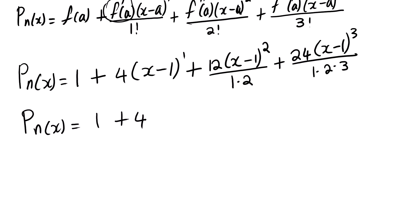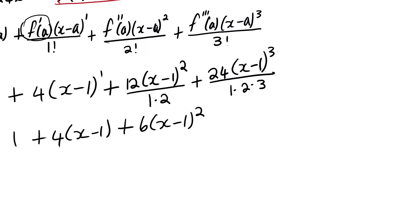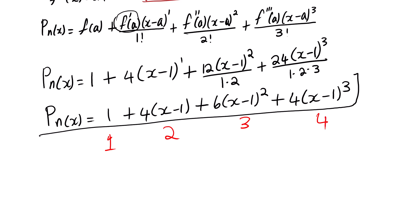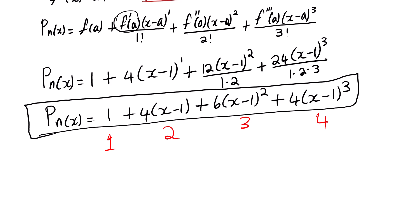Simplifying: 1 + 4(x − 1) + 12/2 · (x − 1)² + 24/6 · (x − 1)³, which gives 1 + 4(x − 1) + 6(x − 1)² + 4(x − 1)³. This is the first term, second term, third term, and fourth term. We are done — this is the Taylor series polynomial.